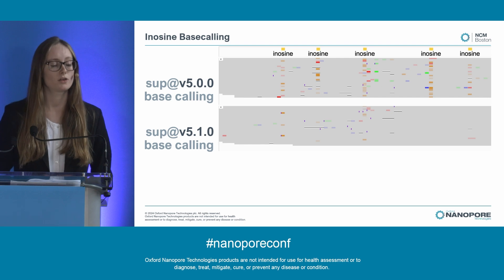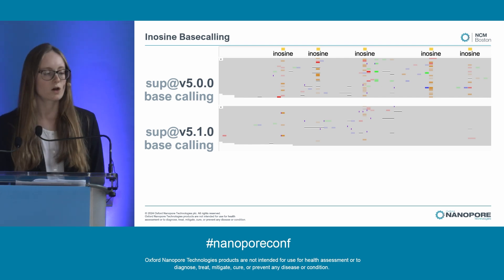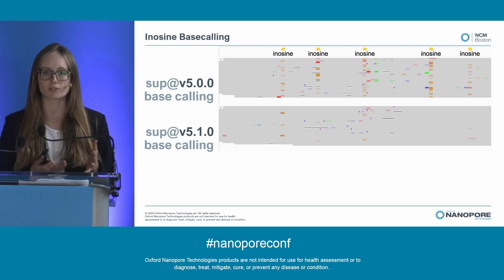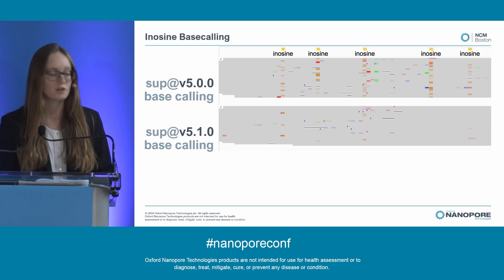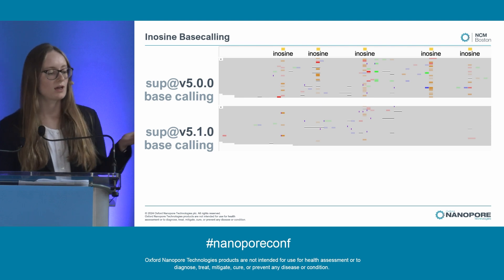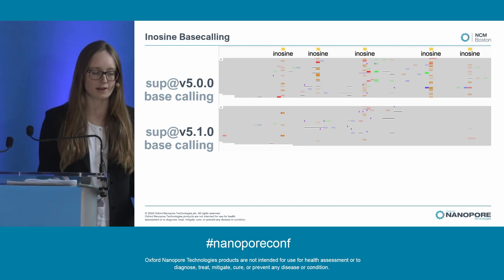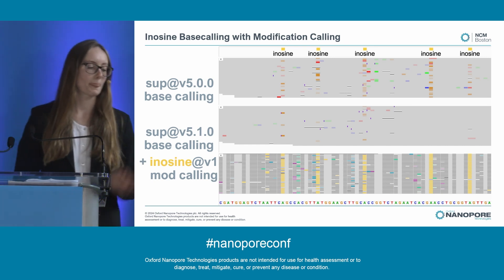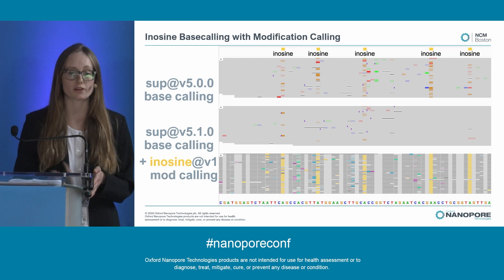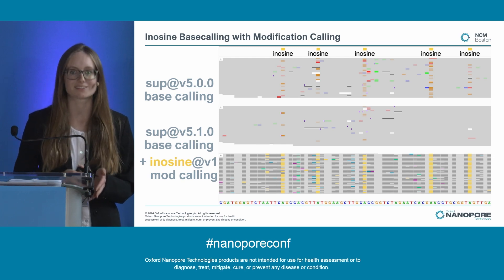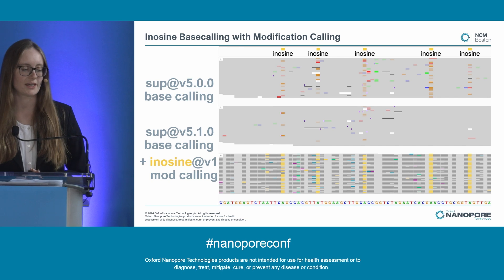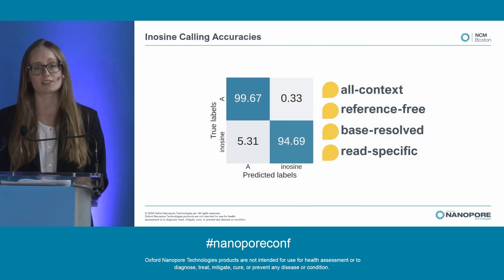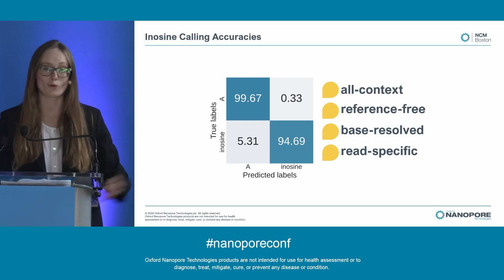Next, if we look at Inosine, you can see that the errors the V5 base caller makes are more localized. This might indicate that the errors are more to do with the level or dwell time that only impacted the base being called. But once again, when we show our new model enough training data, it clears up those errors, and the mod caller can pick out the location of the Inosine. It's really important that the base caller gets the base correct so that the mod caller can look at the correct base when it makes its mod call. The numbers for this are over 94% accuracy, with all the same benefits as all of our mod calling.